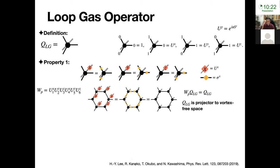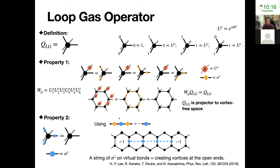One of the later speakers may talk a little bit about this. This projector commutes with the vortex flux operator, so it basically projects into a vortex-free space. Another property is that if I insert a sigma_Z somewhere, this string corresponds to creating vortices at the open ends.